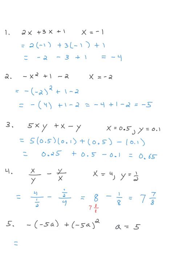For this one, if I put 5 in place of all the a's, I get negative 5 times 5 plus negative 5 times 5, using parentheses to avoid confusion. Following order of operations strictly, that's negative 25 plus I get another negative 25, but I'm squaring that one. If I multiply those two negatives I get positive 25, and if I square negative 25, it's a positive 625. The answer for this one is 650.